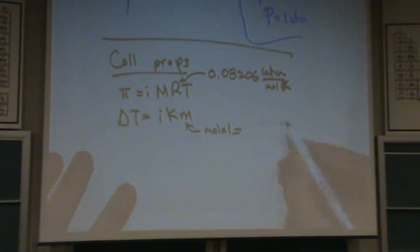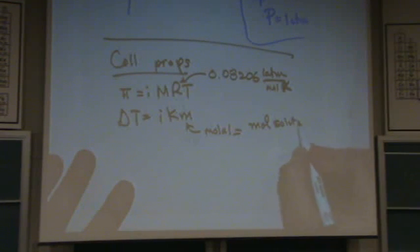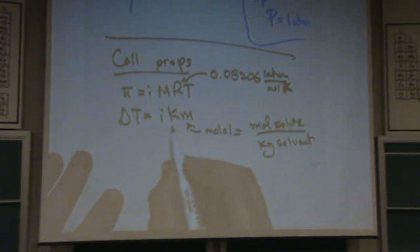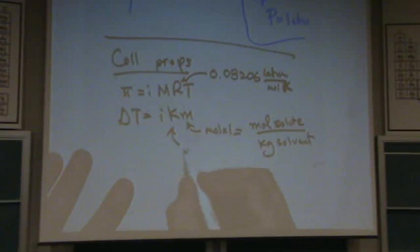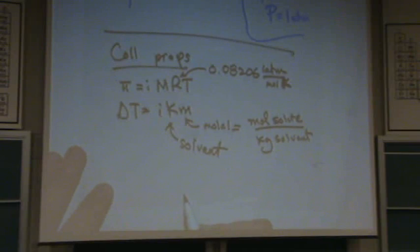Remember, this is molal, which you may have forgot, but it's moles of solute per kilograms of solvent. Most all other concentrations have solution in the denominator. This is the only one that will have solvent in the denominator. K is a constant. It's given. Does K go with the solute or the solvent? That goes with the solvent always.